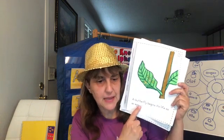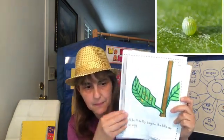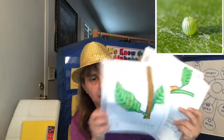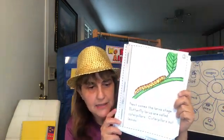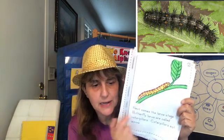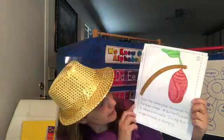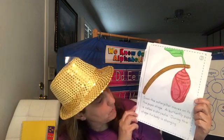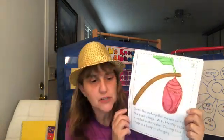The butterfly begins its life as an egg, then it becomes the caterpillar — the larva state. Soon the caterpillar moves on to the pupa stage, and a butterfly pupa is called a chrysalis.